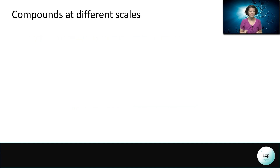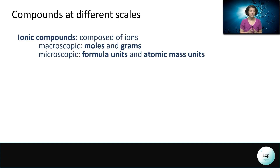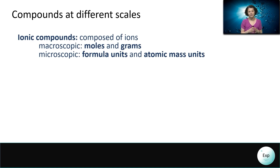When it comes to compounds, compounds can be categorized into two groups. There are ionic compounds, which are composed of positive and negatively charged ions, or cations and anions, held together by electrostatic forces. At their smallest, they make up the formula units, which is a simplified way of giving us the stoichiometric ratio of the cation to the anion across the sample. The mass associated with the formula units is the atomic mass unit. On the macroscopic scale, the larger amount of ionic compounds that we interact with will be expressed in grams and in moles.